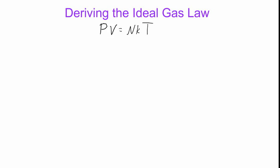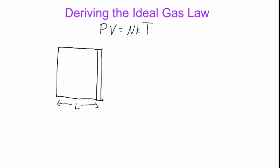This is the picture we have in mind. Let's suppose we have a container where the gas is contained. This container has length L. On one side of the container is a piston — we can think of it as a pressure detector. This container has cross-sectional area A, and so the volume of the box is simply A times L.